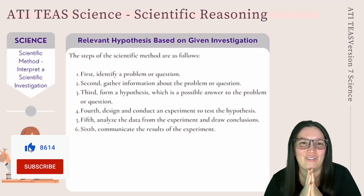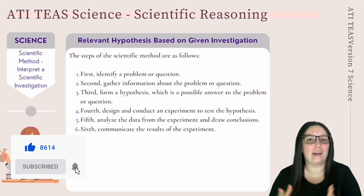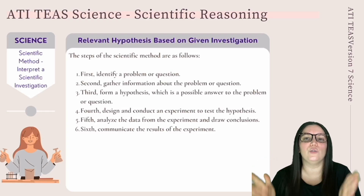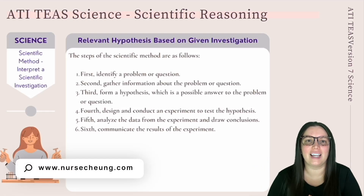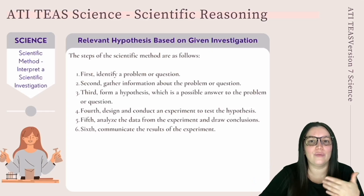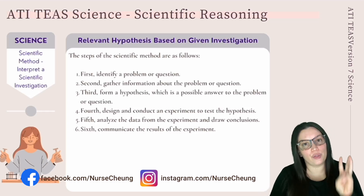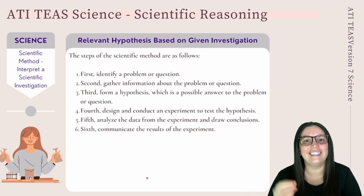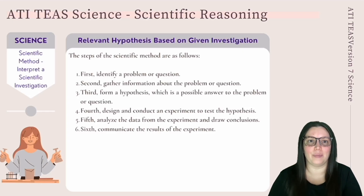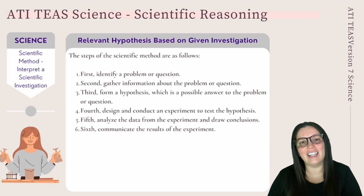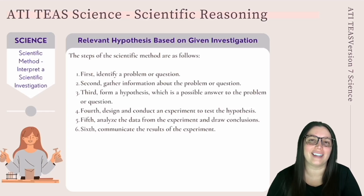Now we get into scientific investigations, beginning with identifying a relevant hypothesis. The scientific method is the process scientists use to answer questions about the world. The steps are: first, identify a problem or question; second, gather information; third, form a hypothesis — a possible answer to the question; fourth, design and conduct an experiment to test the hypothesis; fifth, analyze the data and draw conclusions; and lastly, communicate the results.